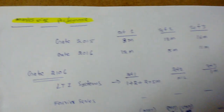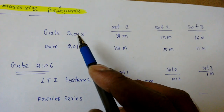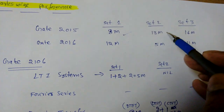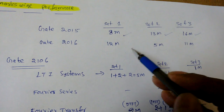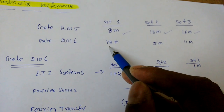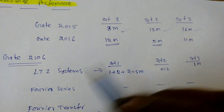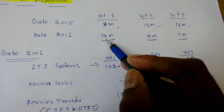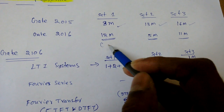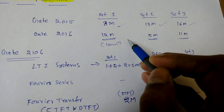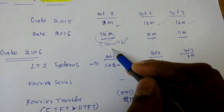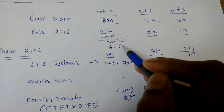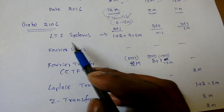Looking at GATE marks performance: in GATE 2015 Set 1 we got 8 marks, Set 2 thirteen marks, Set 3 sixteen marks. In GATE 2016 Set 1 we got 12 marks, one set only 5 marks, Set 3 eleven marks. The variation sometimes occurs because communication problems are also included in this mark count. On average we get six to eight marks.